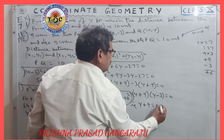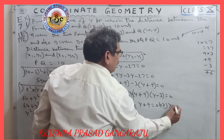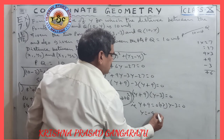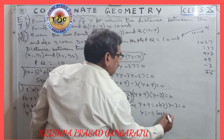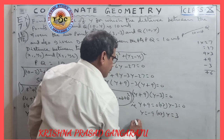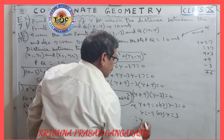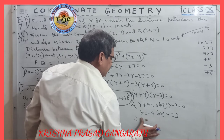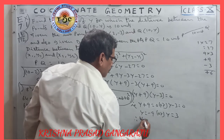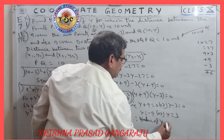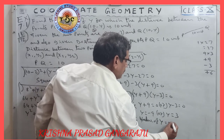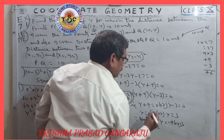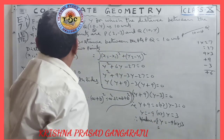Therefore, y + 9 = 0 or y − 3 = 0, giving y = −9 or y = 3. So the value of y is equal to −9 or 3. This is the 11th question.